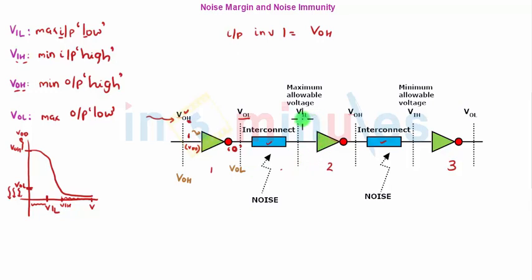Because it's low, here again it's an input to the second inverter, so it's input low, so it should be VIL. Now tell me, how much noise present on this interconnect will not lead to an incorrect value to the input of the second inverter?